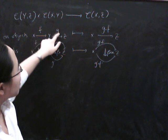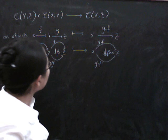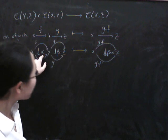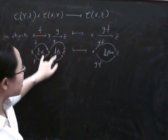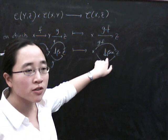On objects, it takes a pair of composable one cells and sends them to a composite. On morphisms, the morphisms in the Holm category are the two cells in our two category. So it's going to take a pair of two cells that are horizontally composable and send them to their horizontal composite.